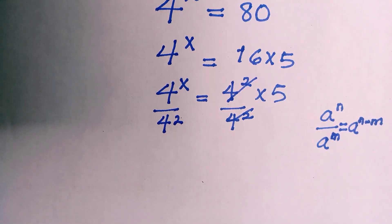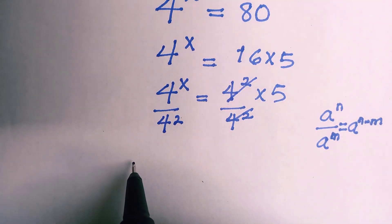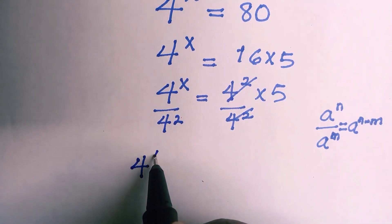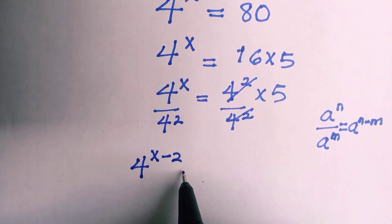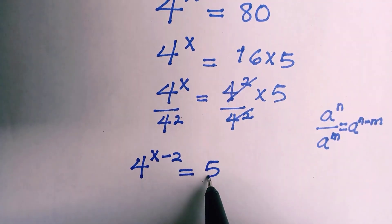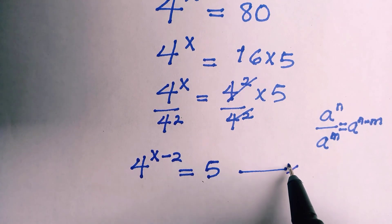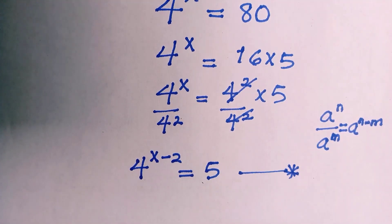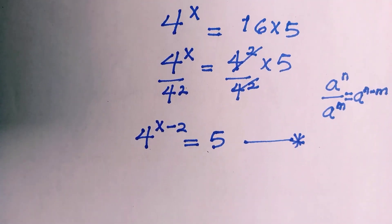So this is division law of indices. By applying it here we have 4 to the power x minus 2 equals 5. So at this stage I will start this equation and the next thing is I want to take the power down.